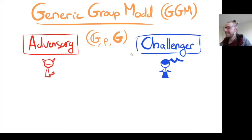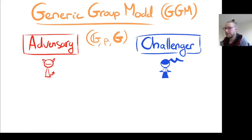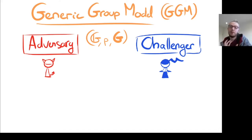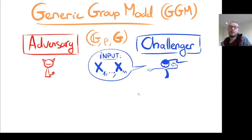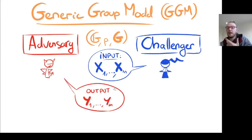The generic group model is an idealized model for cryptographic games defined over a group of prime order p, meaning the group has a generator g. For a security assumption, we build a security game in which the challenger simulates a game for the adversary, and the adversary tries to break the security assumption. What we want to prove is that the adversary has a really low chance to win the game. For simplicity, the challenger gives as input to the adversary some group elements x1, ..., xn, and the adversary outputs some group elements y1, ..., ym, trying to win the game.